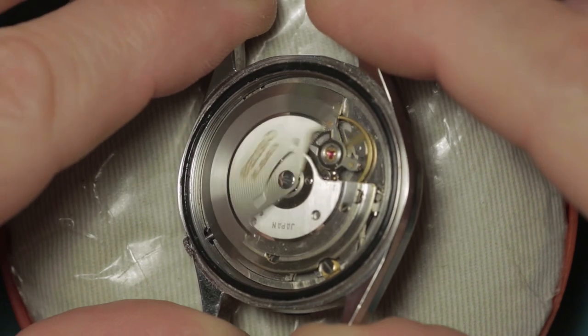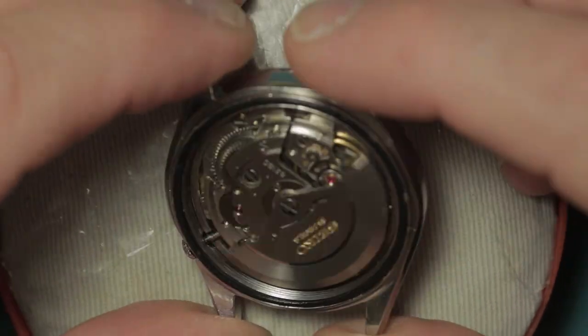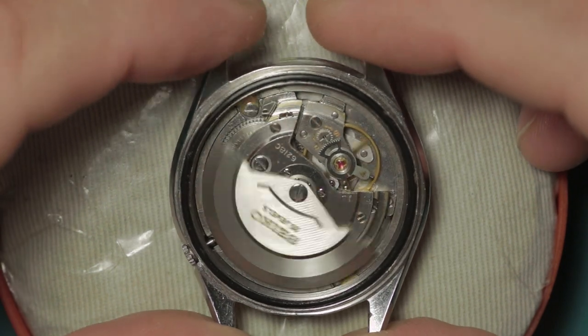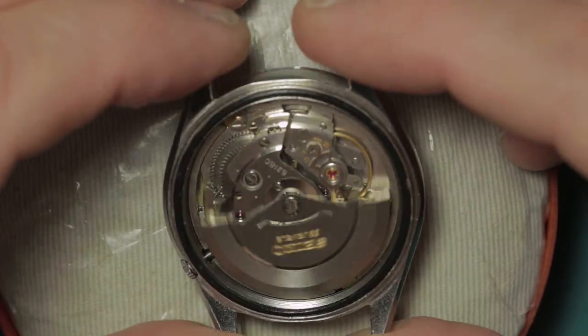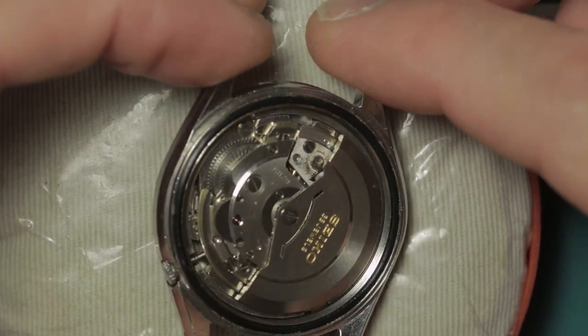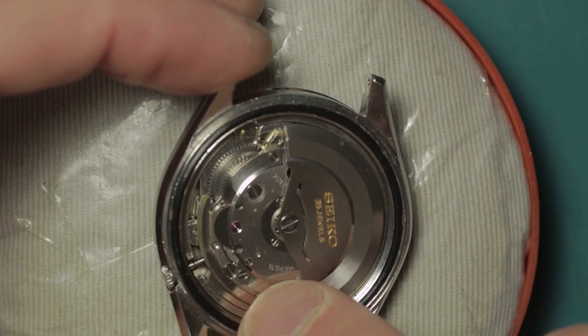Inside we've got a very nice clean looking movement. The balance is swinging a little bit there, which is always good to see, and the oscillating weight is swinging freely as well. Evidence of brassing on the edge of the bridges.